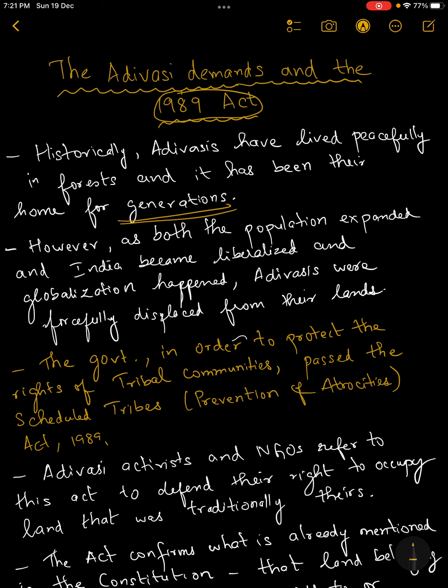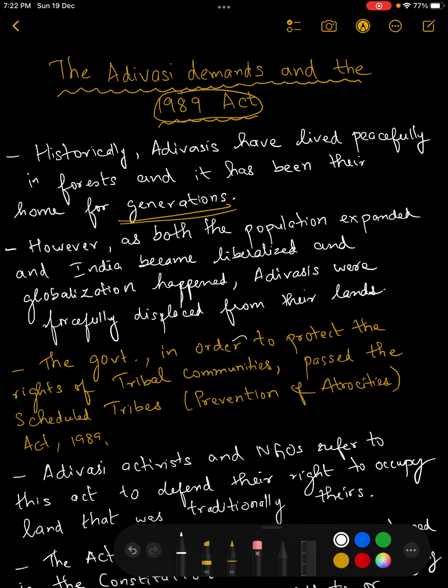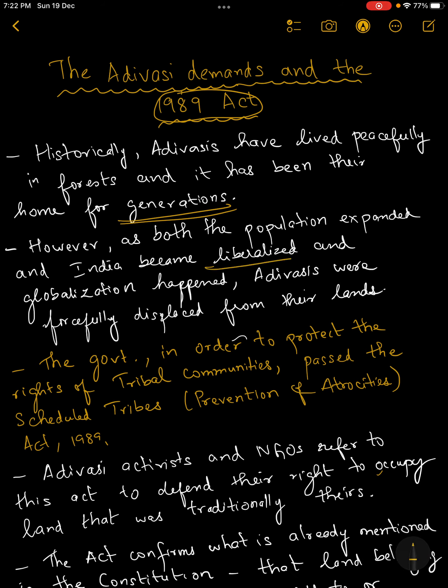In India, even today as of 2021, and historically, you have understood that Adivasis have made forests their home — they have been living and dwelling in them for generations after generations. But you also understand that ever since India moved on the path of liberalization, opening up its economy to foreign investment and globalization, you have brands like McDonald's and KFC that now exist in this country.